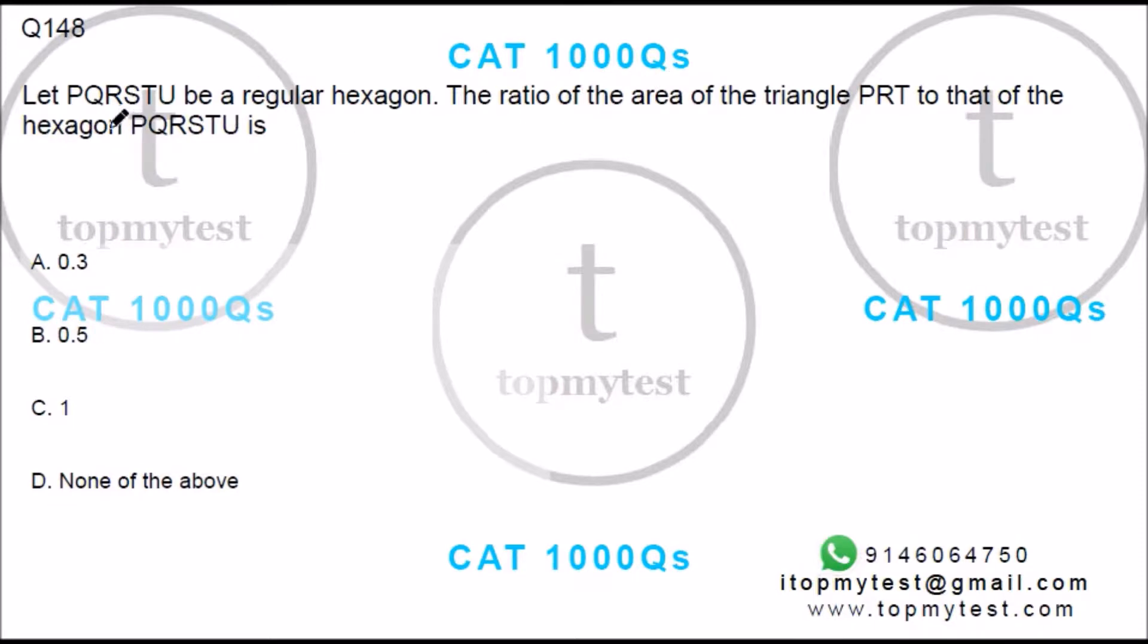This one says PQRSTU be a regular hexagon. The ratio of area of triangle PRT to that of PQRSTU is how much?